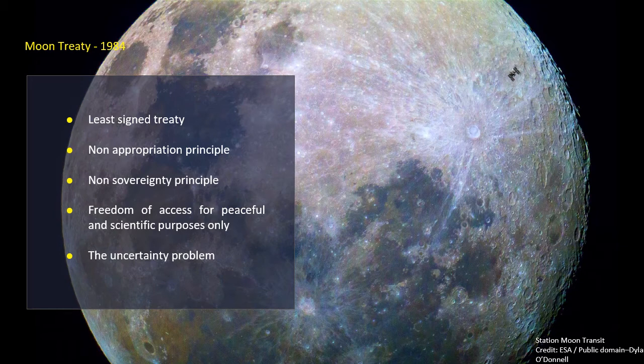In addition, the agreement provides that the Moon and its natural resources are the common heritage of mankind, and that an international regime should be established to govern the exploitation of such resources when such exploitation is about to become feasible. This means the Moon and other celestial bodies are not subject to national appropriation, and activities disrupting the lunar environment are prohibited.